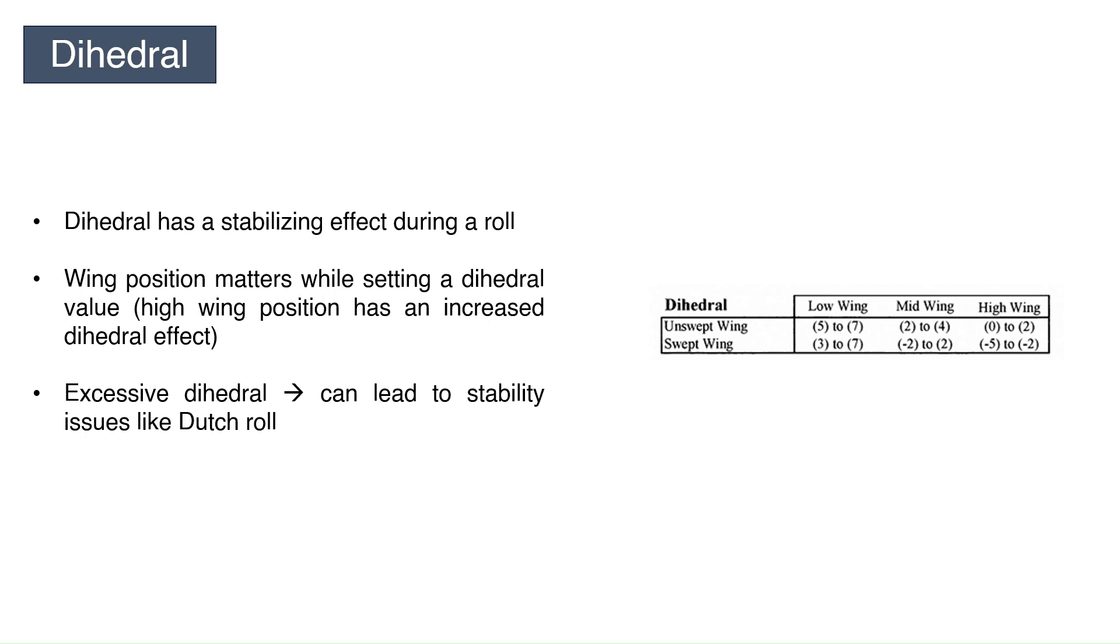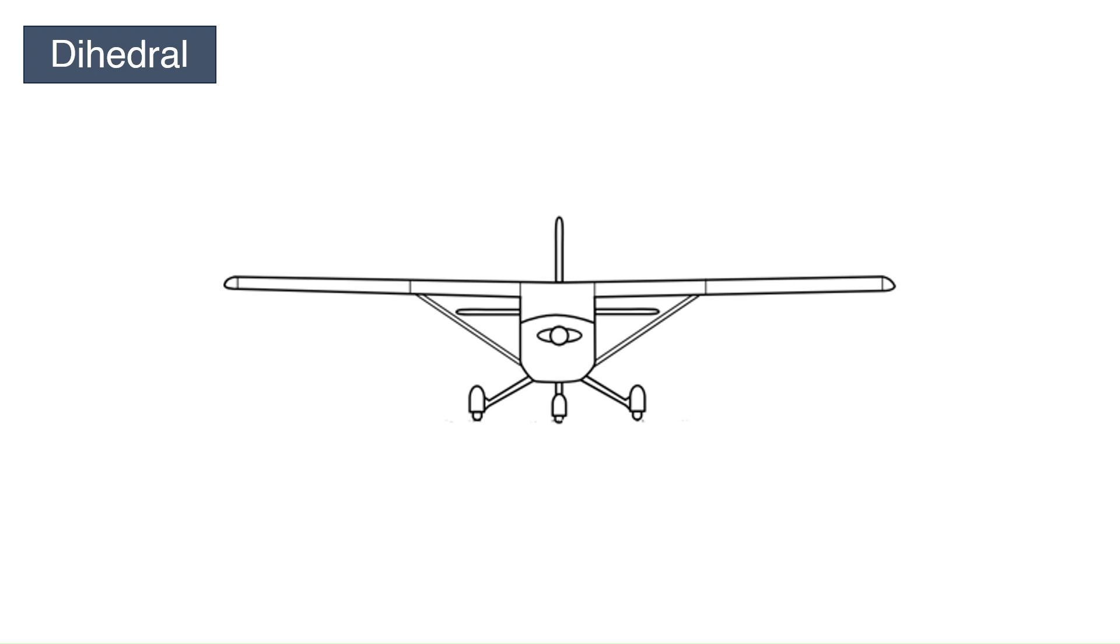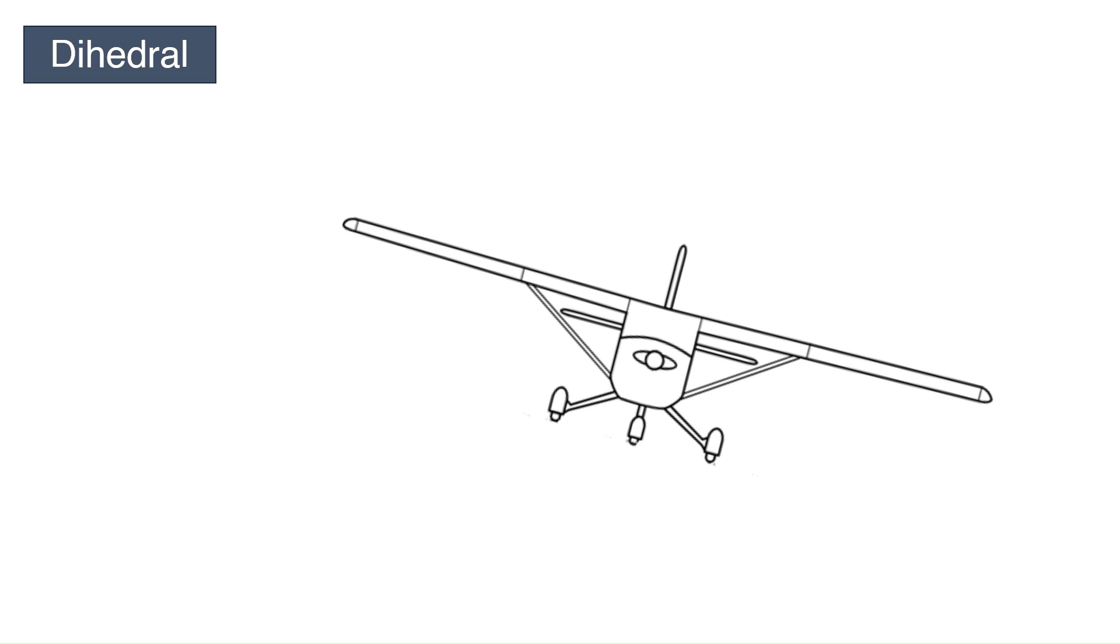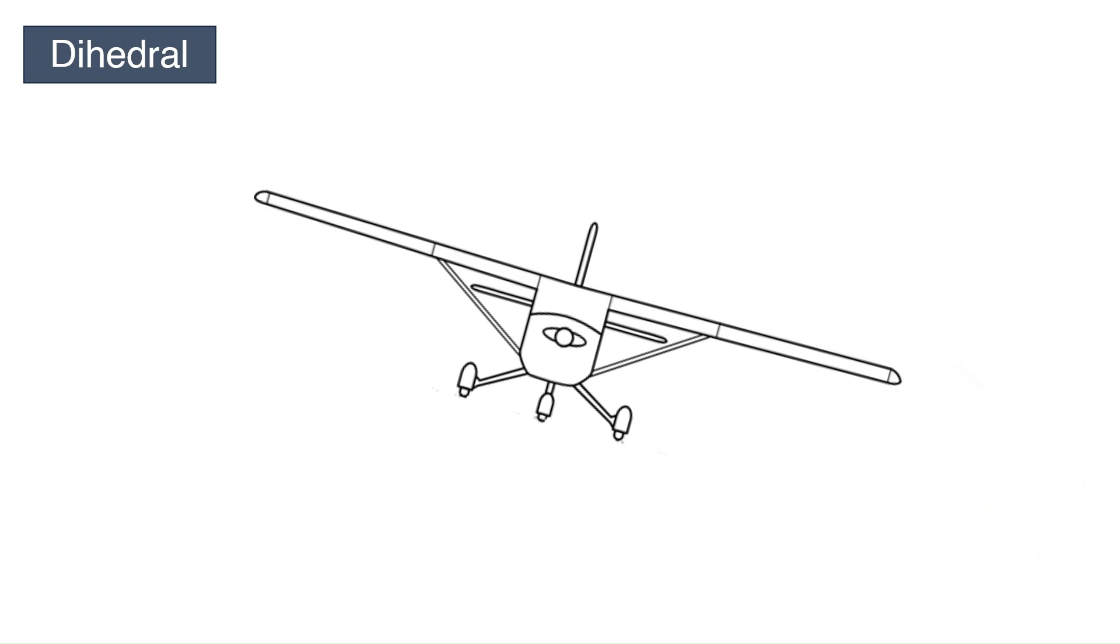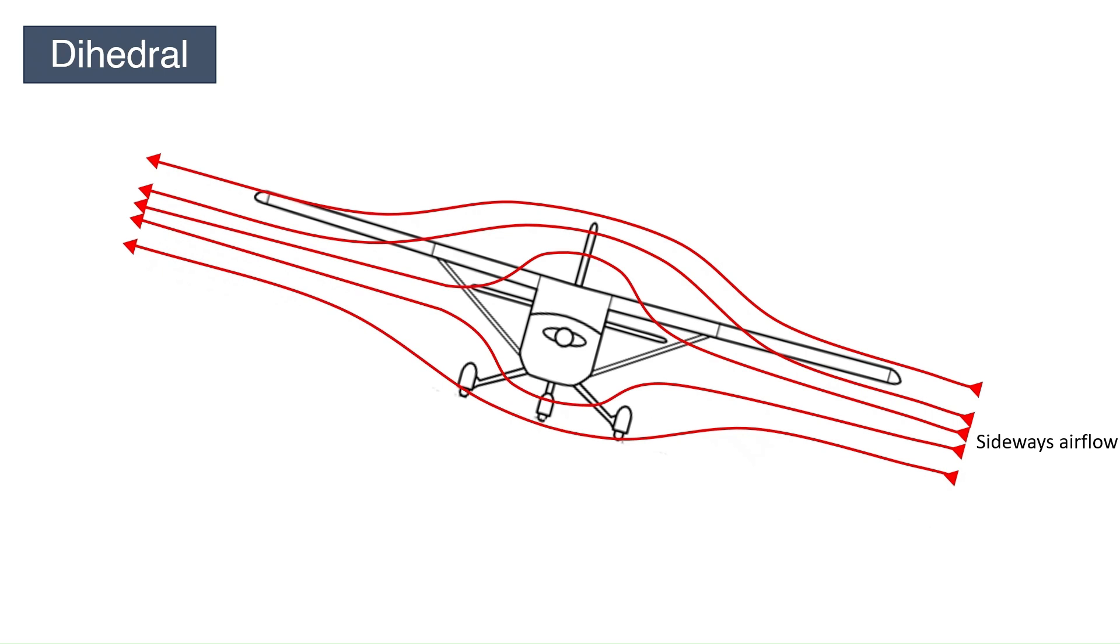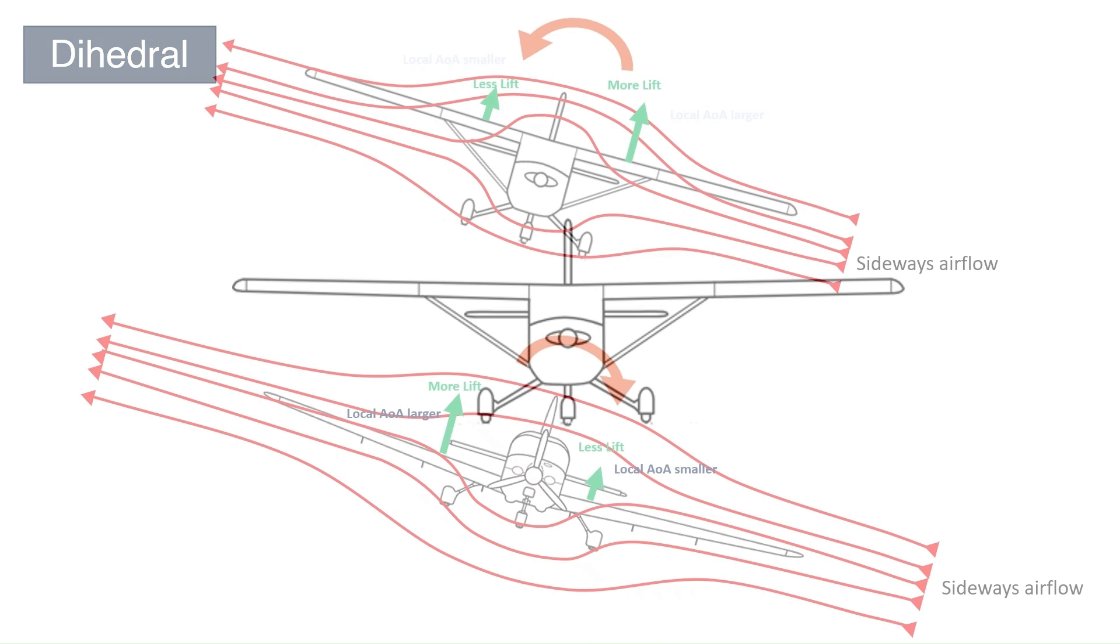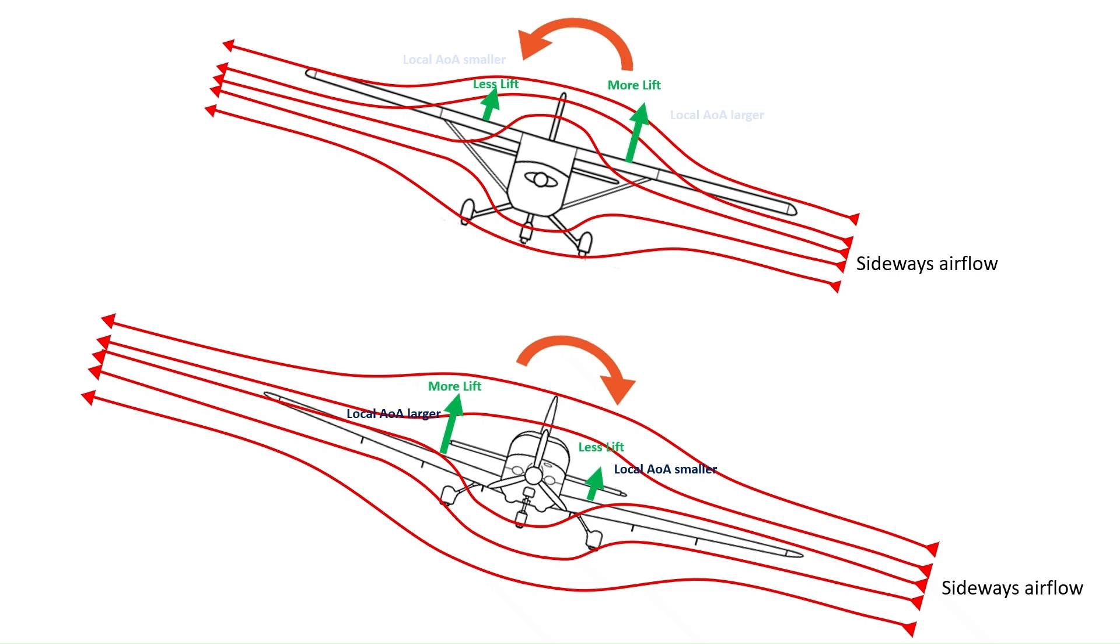A high-wing has an increased dihedral effect and therefore needs a smaller geometric dihedral. A simple explanation as to why this happens is shown here. When rolled to one side, an aircraft will sideslip down to that side. During this sideslip, the fuselage pushes the air over and under itself. In case of a high-wing airplane, the air moving over the top of the fuselage moves in such a way that the windward wing sees a higher angle of attack near the root and the leeward wing a lower angle of attack. This causes a rolling moment that stabilizes the aircraft. The opposite is true for a low-wing aircraft. This is why low-wing airplanes need more dihedral, and high-wing planes like Cessna 172 require almost none.